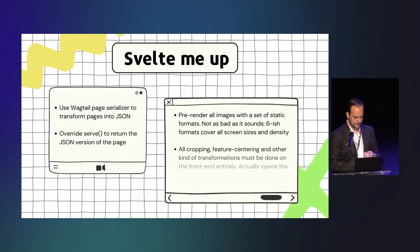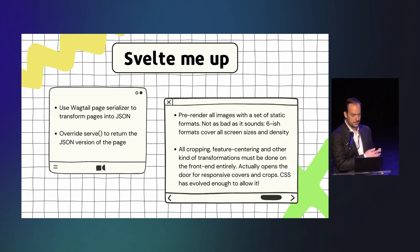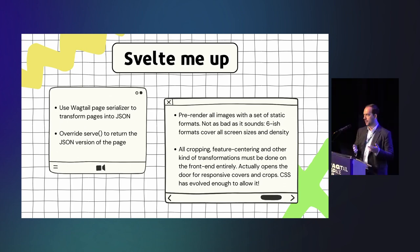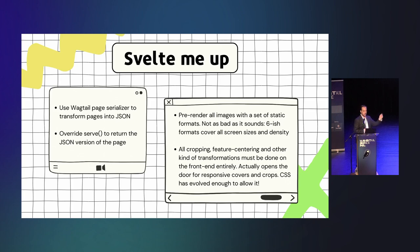So, another strategy that we are developing is to serialize the pages into JSON using the serializer, the page serializer from Wagtail. That is pretty easy to use. We override the serve method to return JSON instead of HTML. So, we just call the serializer. So, basically, we return the JSON and then Svelte can render the page according to this JSON and put the right components and so on. The only issue is the images. So, how do we solve the images? Because we still don't know the formats in advance.